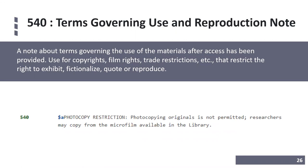Field 540 is the terms governing use and reproduction note — a note about terms governing use of materials after access has been provided. In the example here, there is a photocopy restriction: the originals may not be photocopied, but the microfilm can be copied, indicating the original materials are probably too delicate to be photocopied. Subfield A is where the actual terms are listed.